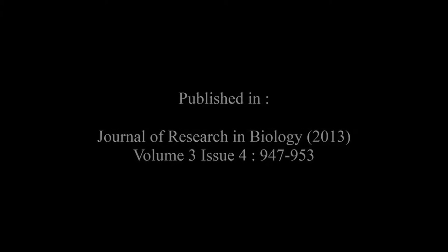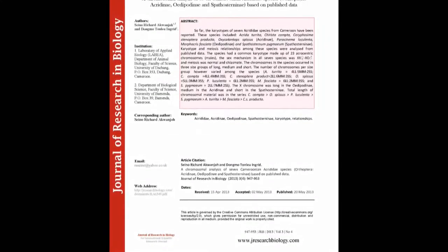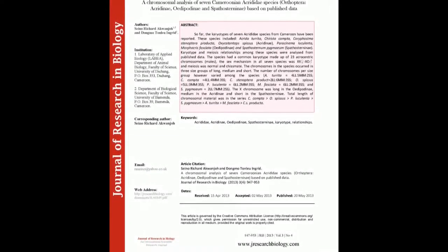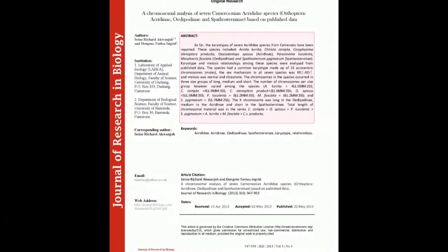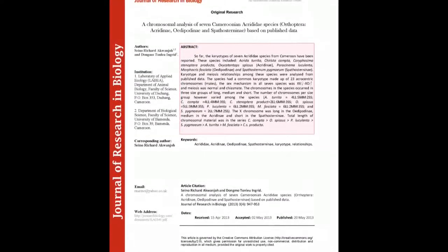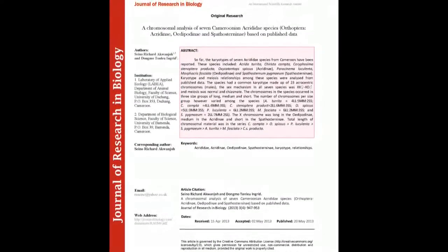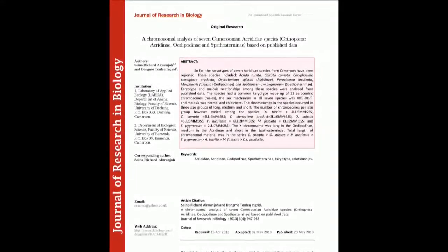The summary of this article goes as follows. The karyotypes of seven Acrididae species from Cameroon have been reported. These species included Acrida turrida, Chyristochna, Chorathosimustonopter producta, Toxicatota species (Acridiniae), Paracinema leuculata, Morphacris fasciata (Adipodiniae), and Spathostornum pygmium (Spathostorninae).